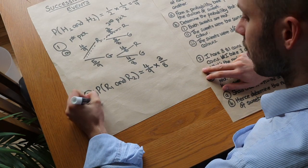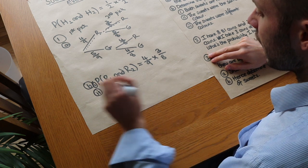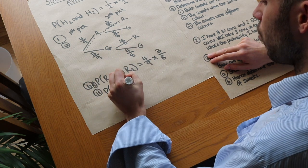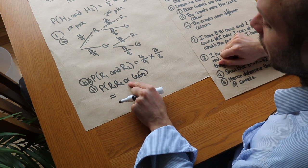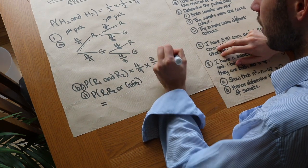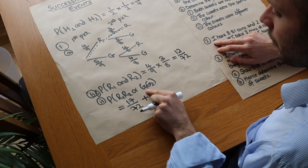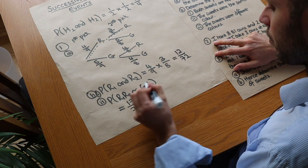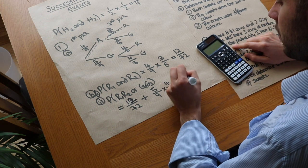For part C, we want the probability the sweets were the same colour — both red OR both green. We add the probabilities: both red is 12 over 72 (already worked out), and both green is five ninths times four eighths. Adding these together gives a probability of four ninths.